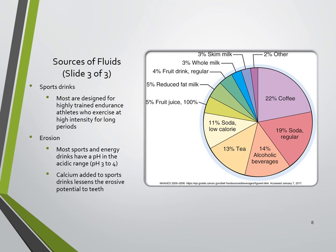Sports drinks are designed for highly trained endurance athletes who exercise at high intensity for long periods of time — not for someone who goes to the gym for an hour, but for someone running 100 miles a week or training for hours per day multiple days a week. Products like Powerade and Gatorade are high in both sugar and sodium, so you need to be careful with them.